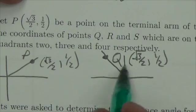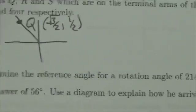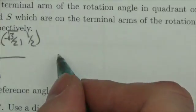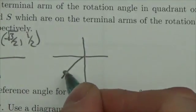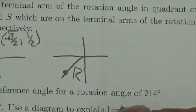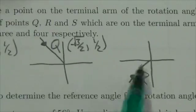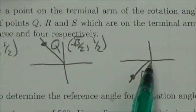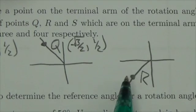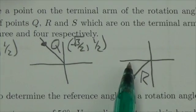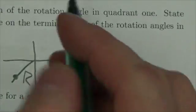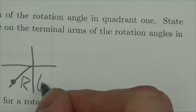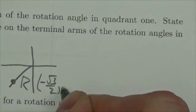If I now reflect this into quadrant 3, it's gonna come down here — this is point R. The distances are still the same; I'm still going over root 3 over 2 and going vertically 1 half, but now both of those are negative. So this will end up being negative root 3 over 2 comma negative 1 over 2.